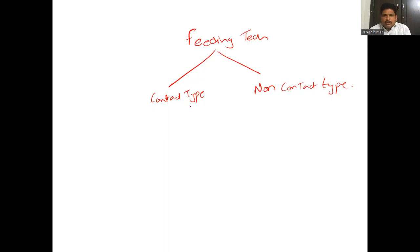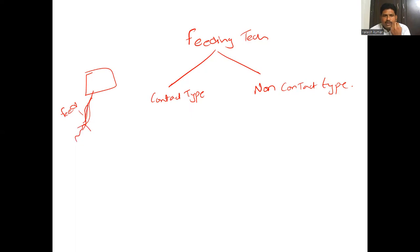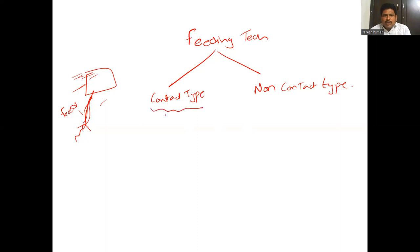Contact type means whatever the feeding element is there, it will be directly connected to the patch. For example, a strip line has direct contact with the patch, so if you provide excitation it will make the patch to excite. In non-contact type, there is no physical connection between the strip line and the patch — they are connected through electromagnetic coupling.